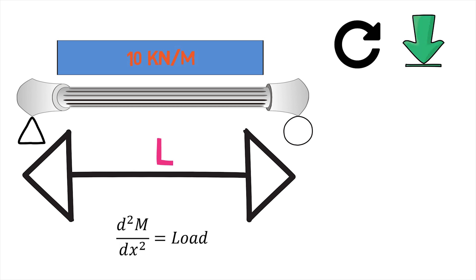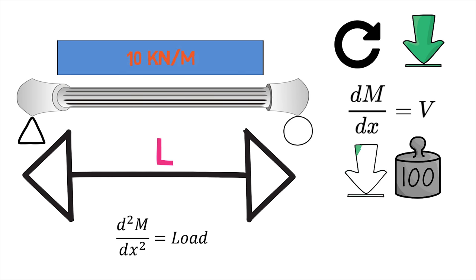The moment on the beam and the shear force are related by the first derivative of moment with respect to x. The load and the shear force on the other hand are given by the first derivative of shear force with respect to x.